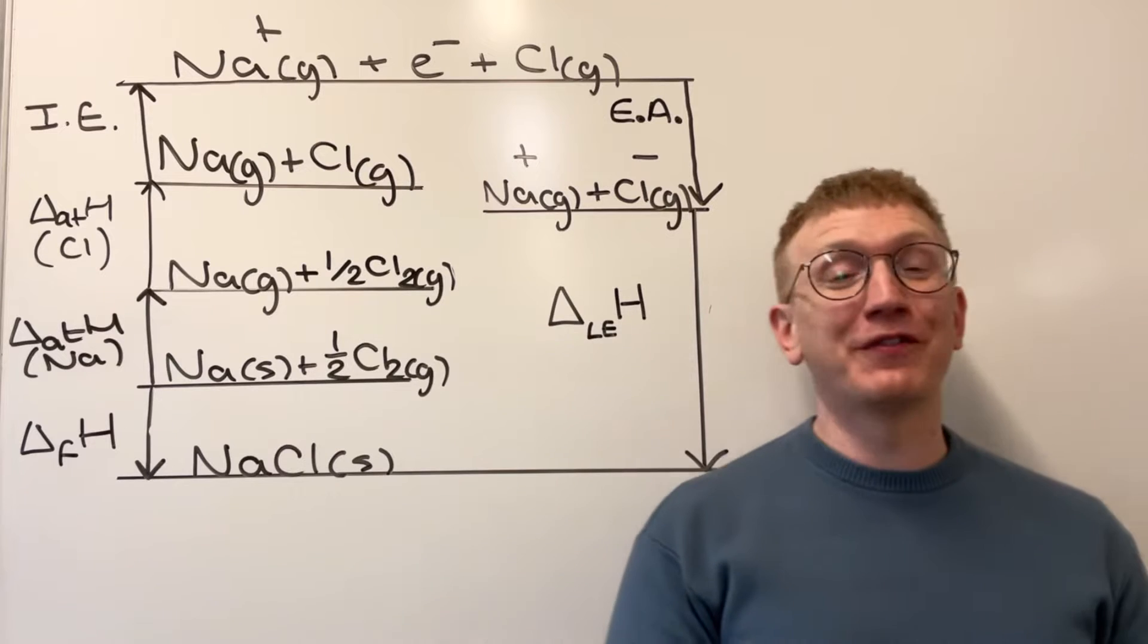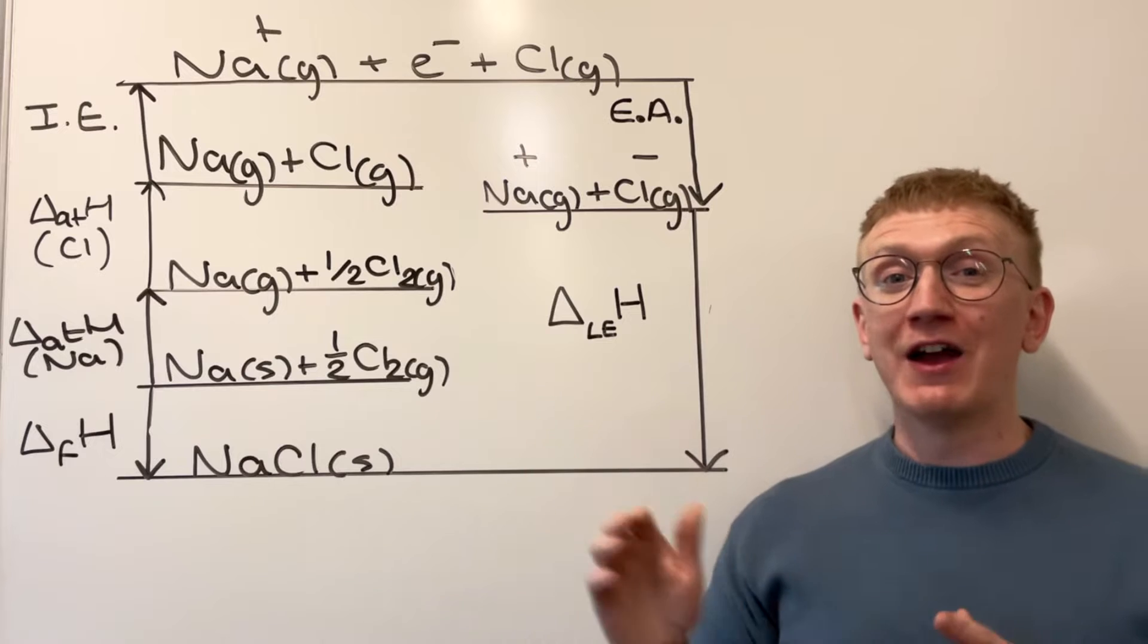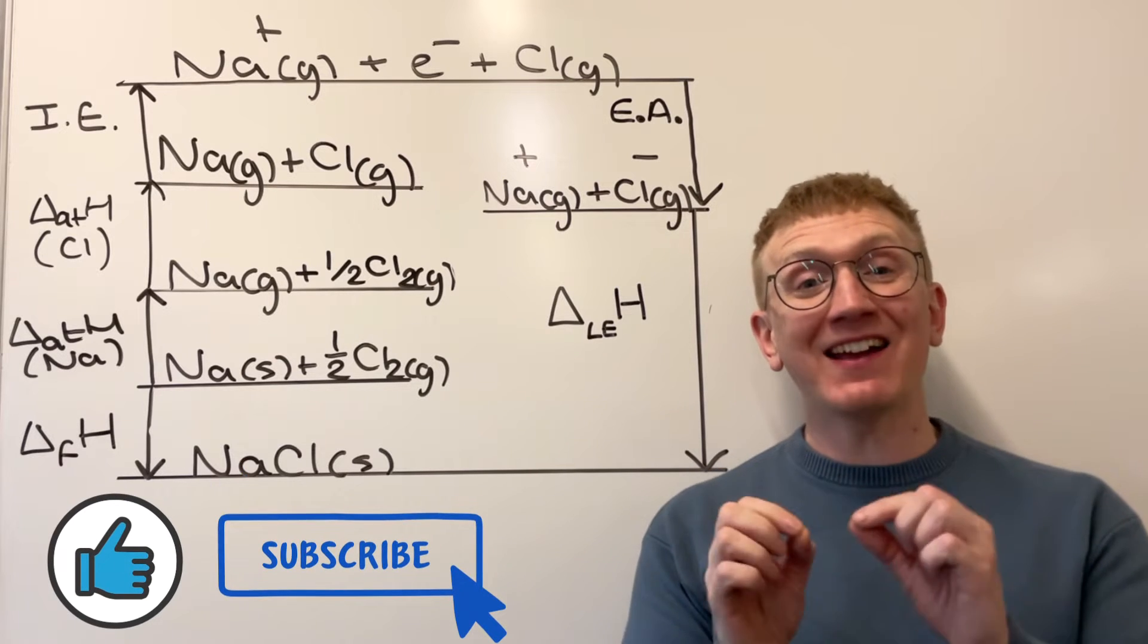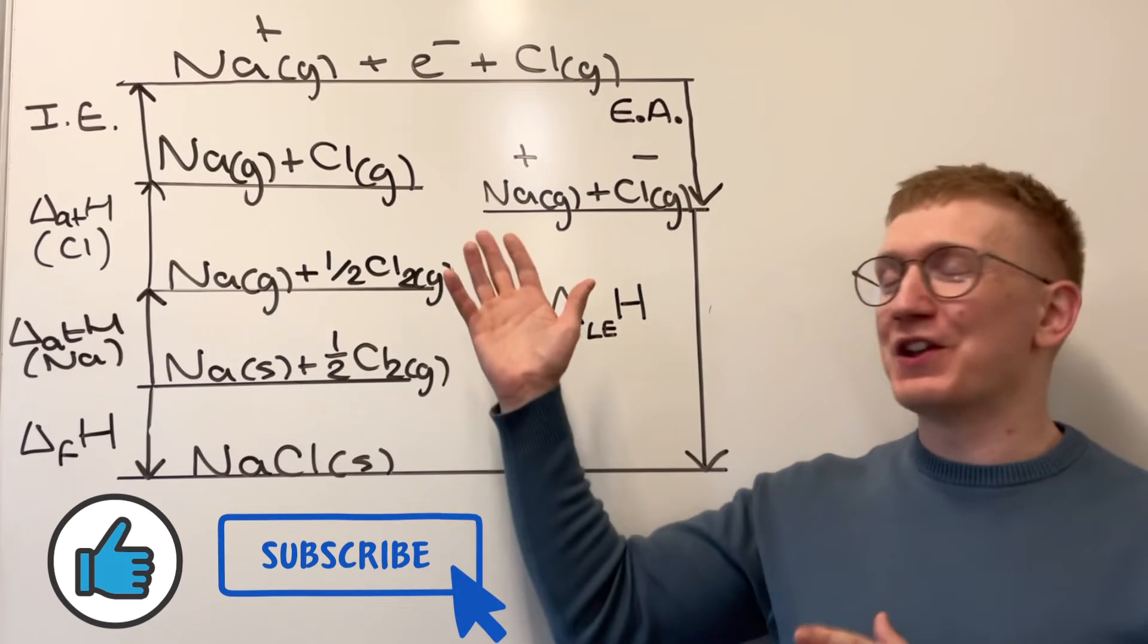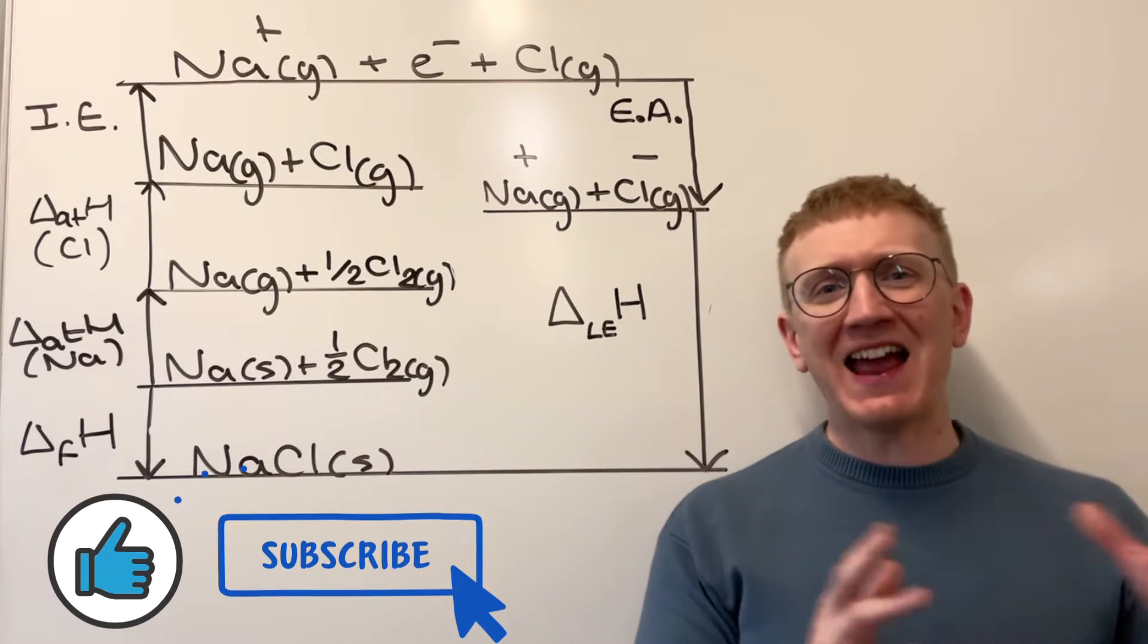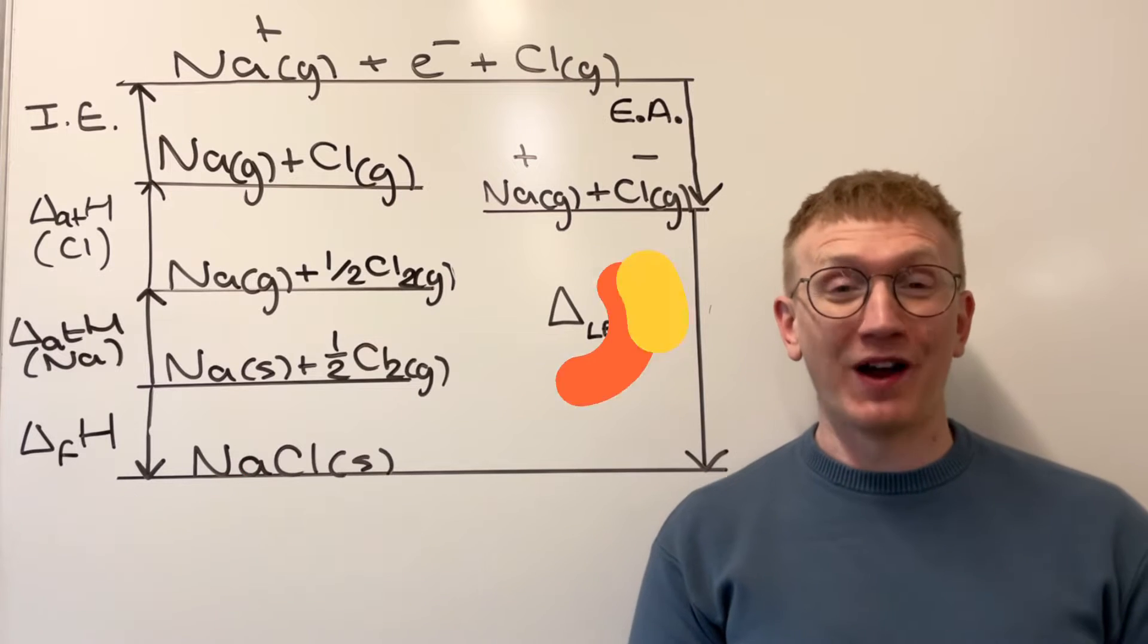Here I have the Born-Haber cycle for sodium chloride, which contains some upwards arrows and some downwards arrows, representing endothermic and exothermic enthalpy changes, respectively. But why do they point up and down? Why are some of these endothermic and some of them exothermic? In this tutorial, I'm going to explain why.